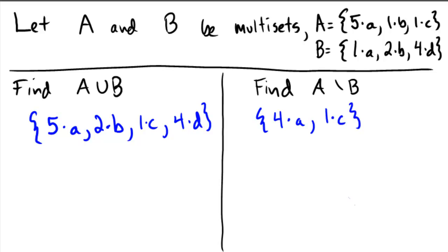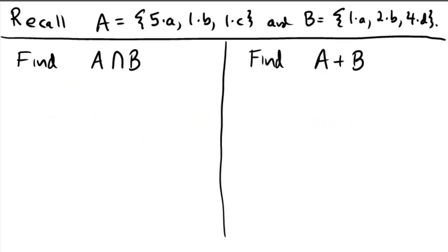Try to do something with the same analysis on your own. Recall we have set A as five copies of A, one B, one C, and B was one copy of A, two copies of B, four copies of D, and see if you can do these two problems. Assuming you gave it a good shot here.